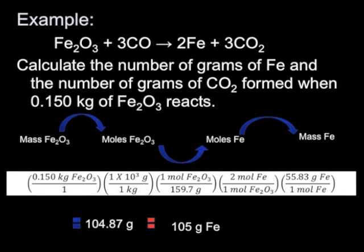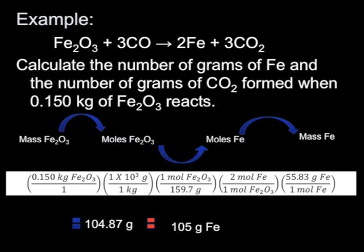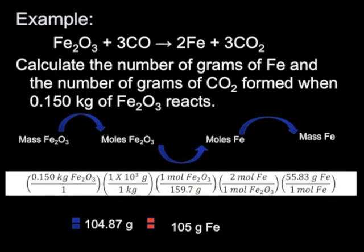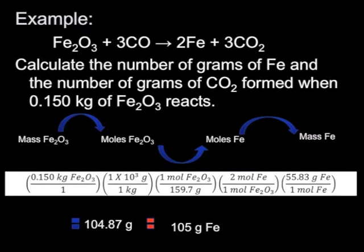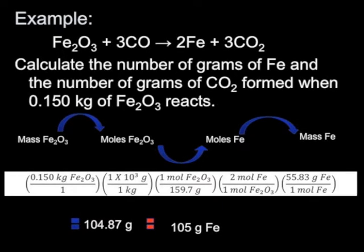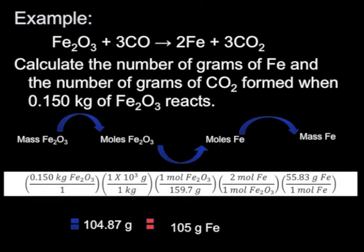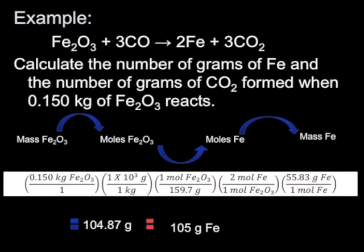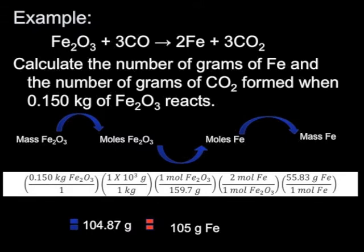Multiply that by the conversion to get to grams, because our molar mass is always in grams. So there's 1 times 10 to the third grams per 1 kilogram. Divide by the molar mass of iron oxide, 159.7 grams. So now at this point we have the number of moles of iron oxide that we have in that 0.150 kilograms. But we don't want iron oxide, we want information about the iron. So now we're going to do a mole to mole ratio. So from the balance equation for every one of those iron oxides that reacts, we're going to produce 2 moles of iron. So we have this 2 to 1 molar ratio.